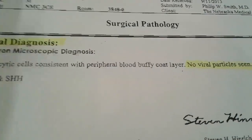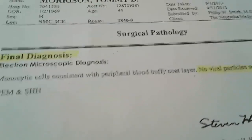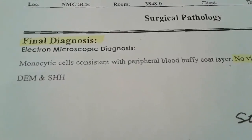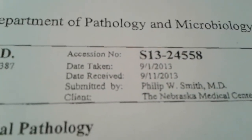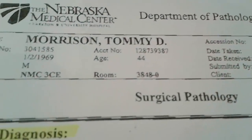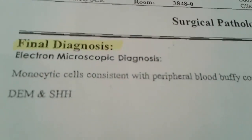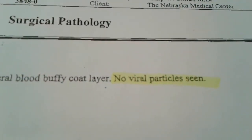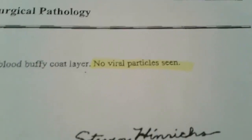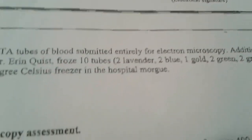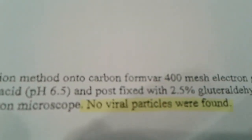Then in 2013, when Tommy passed away, I had his blood drawn again. They asked if I wanted an autopsy, and I said yes, I want a blood autopsy. So they drew his blood on September 1, 2013. And as you see, Tommy Morrison — the final diagnosis of Tommy's blood from the post-mortem blood autopsy: no viral particles seen. That means there were no viruses in his blood. And again, at the end of the pathology report, no viral particles were found, which means that there's no HIV in his system.